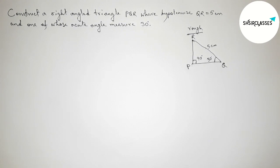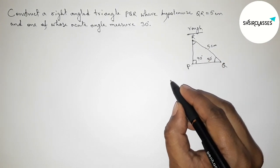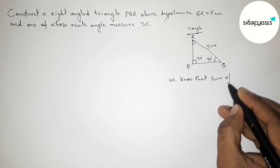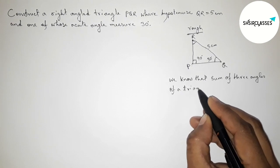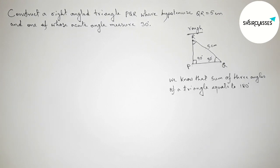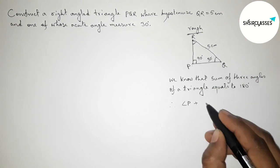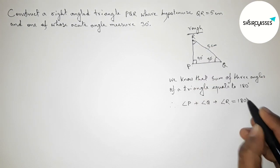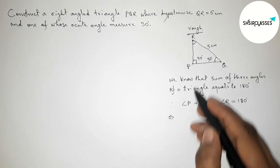Next we have to find the value of angle R using an important theorem. We know that the sum of the three angles of a triangle equals 180 degrees. Applying this, we find angle R. Therefore: angle P plus angle Q plus angle R equals 180 degrees. Putting in the known values — angle P is 90 degrees.